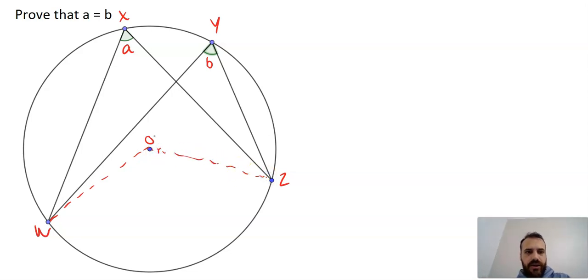I can simply say that angle WOZ is equal to 2 times angle WXZ. And because of that theorem, I'll just put that here. Okay, that's enough to show that's the theorem we're using.